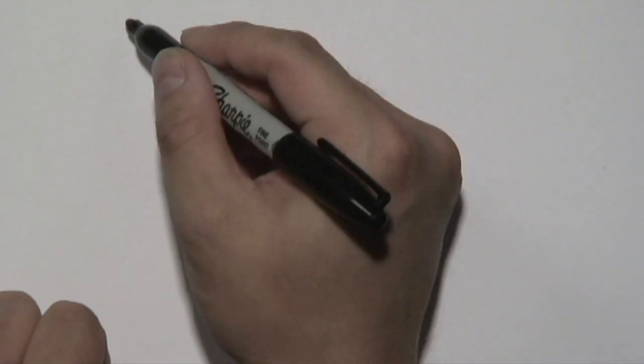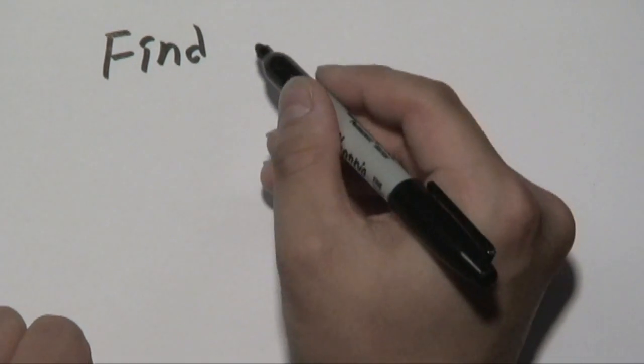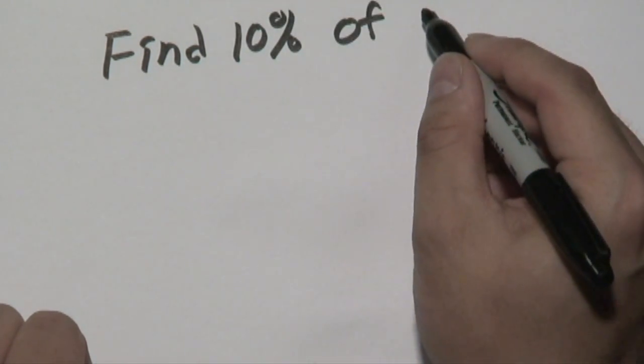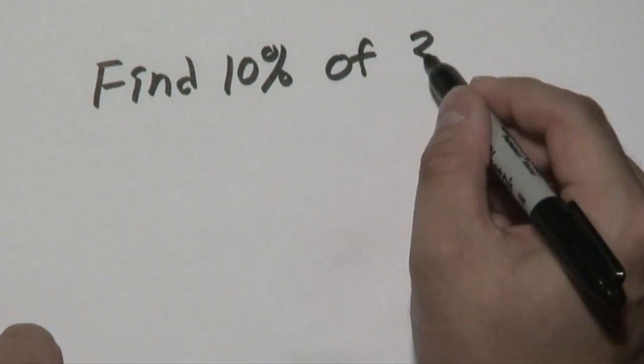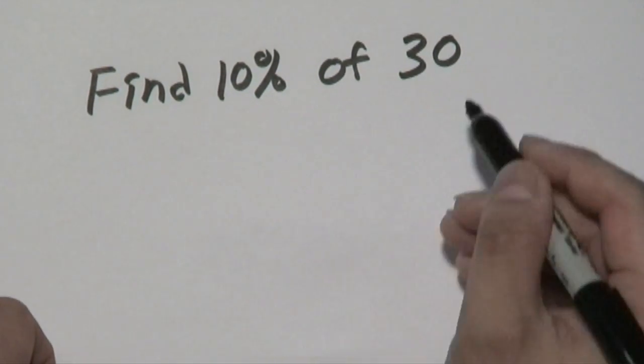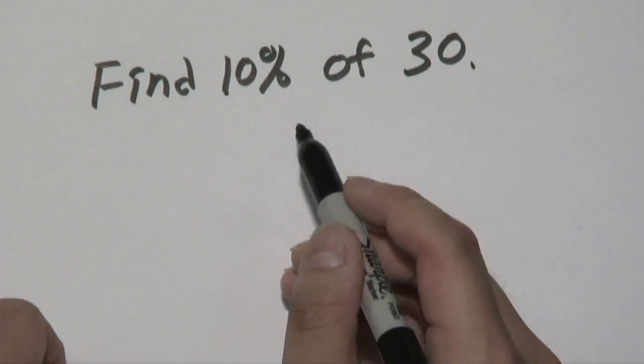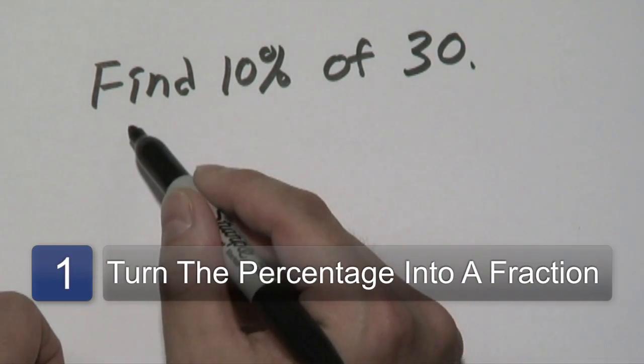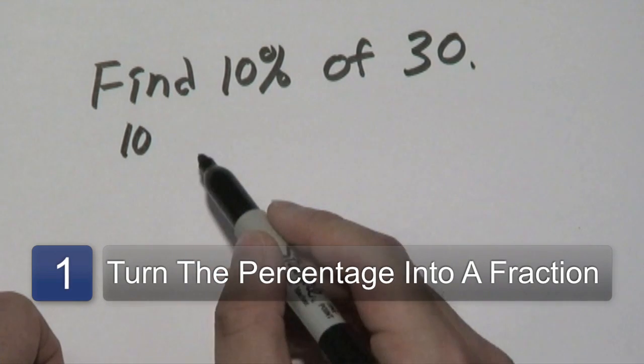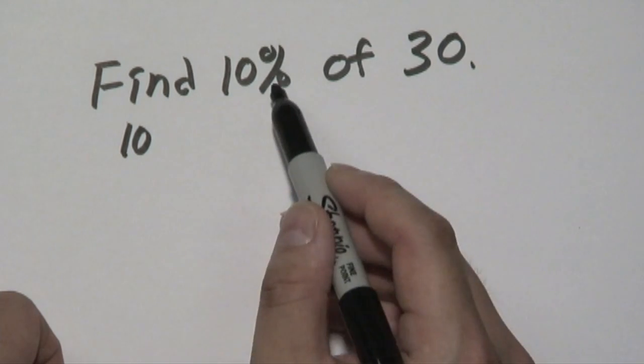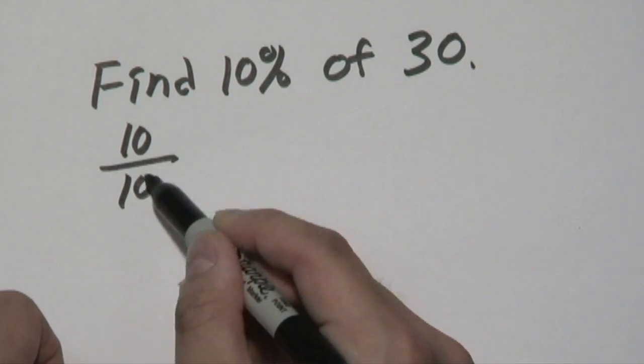Now for example, we're going to find 10% of 30. It's a very straightforward process. Take the 10% to find out the actual value of 10% of 30. You take the 10% and you turn it into a fraction. Now 10%, the highest percent you can have is 100.